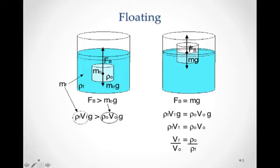So obviously, the density of the fluid is greater than the density of the object here, but the volume of the displaced fluid here in this small disk is less than the overall volume of this object.